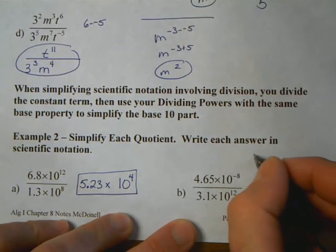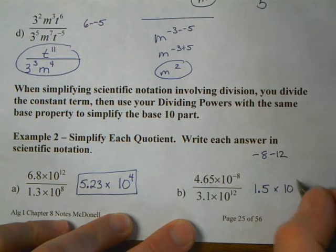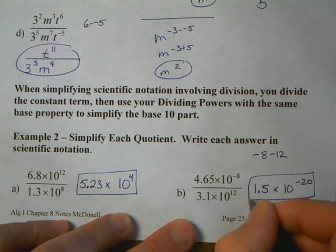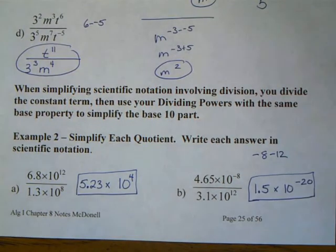Our second one here, we're going to take 4.65, and I'm going to divide that by 3.1. That went in exactly. That's 1.5. And then I'm going to subtract my exponents. Negative 8 minus 12. Negative 8 minus 12 is negative 20. Now, with scientific notation, this is the one exception that you're allowed to have where you have negative exponents, and we don't have to put them in the bottom like we do with variables.